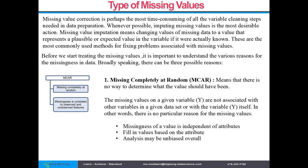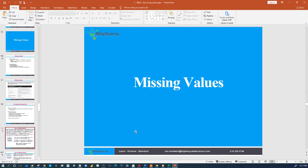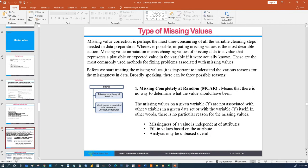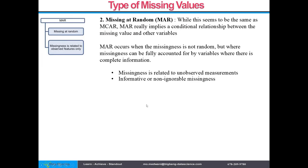MCAR — Missing Completely At Random — is very hard to determine the correct value for. If a value is missing and completely random, we have to find an approximation. We probably won't get the right value, but we'll get something closer to it. MAR — Missing At Random — occurs when the missingness is not truly random but can be fully accounted for by another variable with complete information.